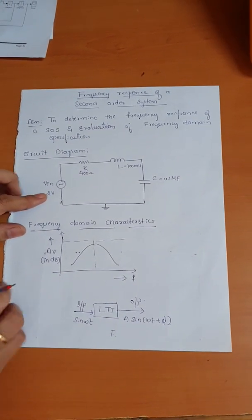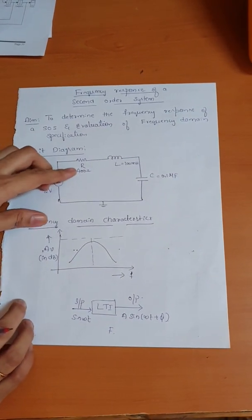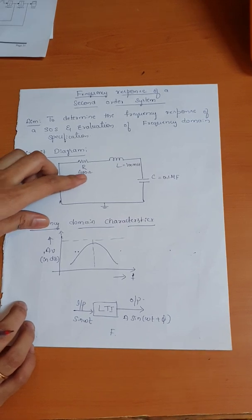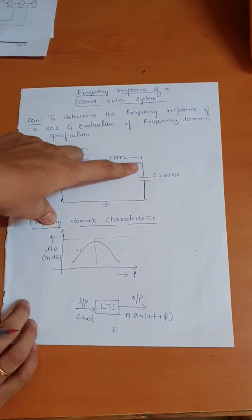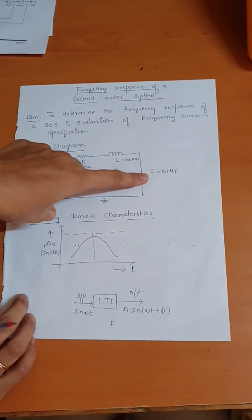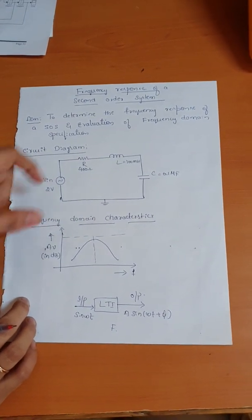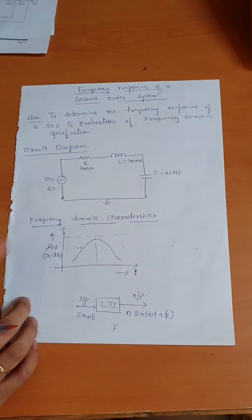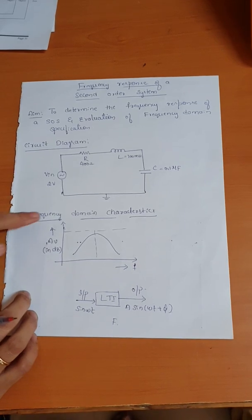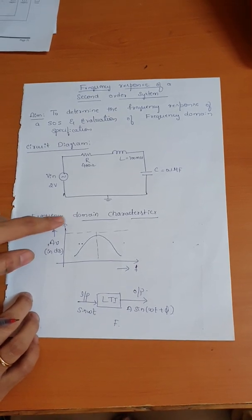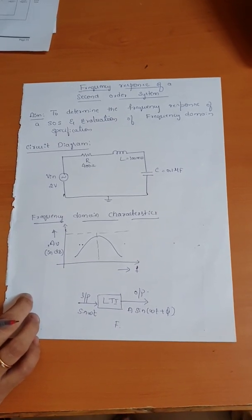The resistance required is 400 ohms, inductance required is 100 millihenry, and the capacitance is 0.1 microfarad. Across the capacitor we are going to measure the output voltage. This is the frequency domain characteristics of the frequency response experiment.